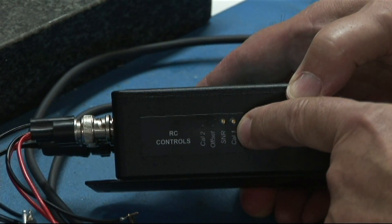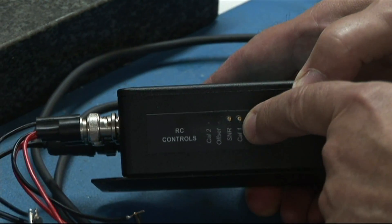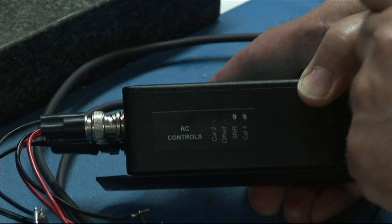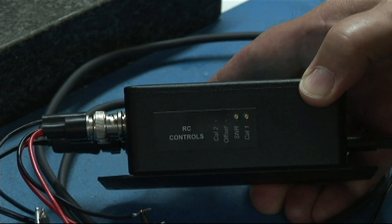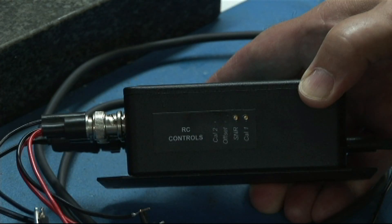Now, the CAL1 control is what we're going to use to set the output of the sensor to be equal to 5.00 volts, when the sensor is gapped to exactly one-half inch.